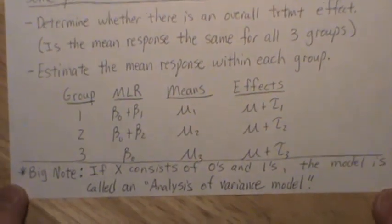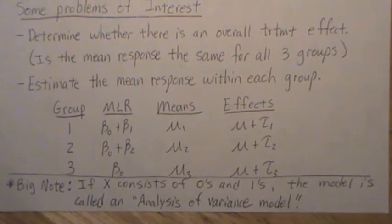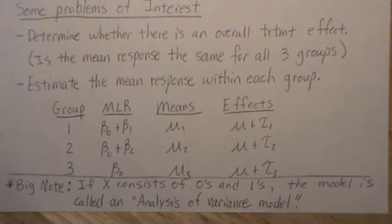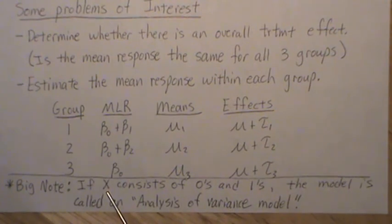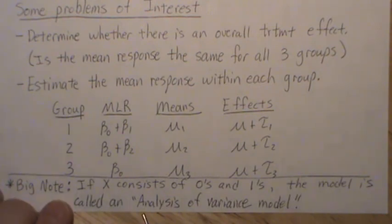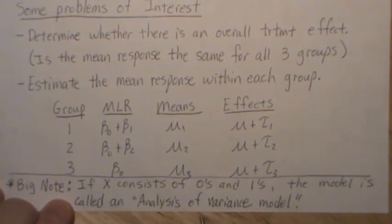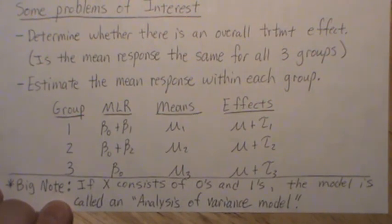So one last note is, if the design matrix x consists of all zeros and ones, then the model is referred to as an analysis of variance model, or more commonly ANOVA, say A-N-O-V-A, ANOVA model.